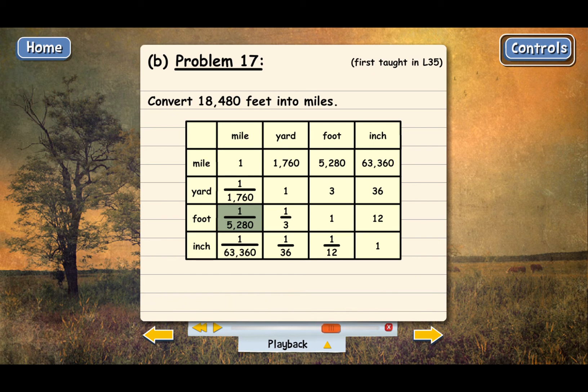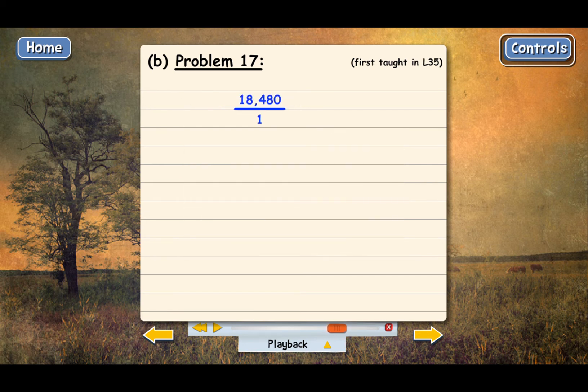To perform the multiplication, we just need to convert this whole number into a fraction by putting it over 1. And next, we'll just multiply the tops and the bottoms.